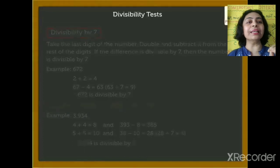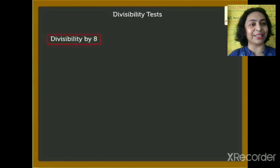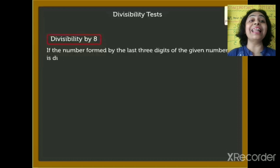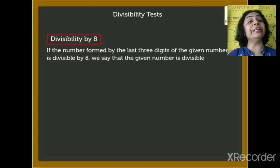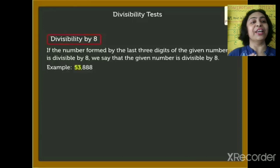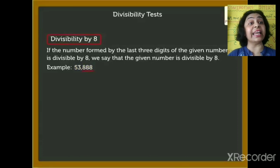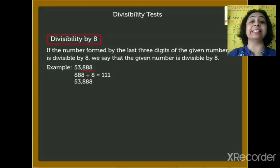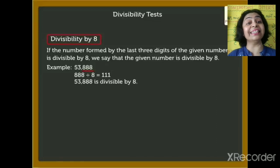Children, by using this test you can check any number for divisibility. Divisibility by 8: if the number formed by the last three digits of the given number is divisible by 8, we say the given number is divisible by 8. Also, if there are three zeros at the end, it is also divisible by 8. Example: 53,888. Last three digits are 888. Is 888 divisible by 8? Yes, so 53,888 is divisible by 8.